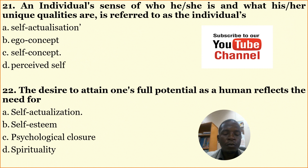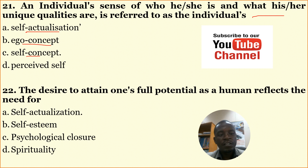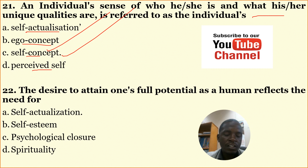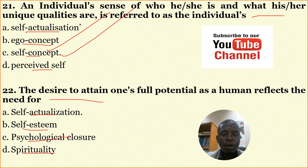Number twenty-one: An individual's sense of who he or she is and what his or her unique qualities are is referred to as — A: self-actualization, B: ego concept, C: self-concept, D: perceived self. The correct answer is self-concept. Number twenty-two: The desire to attain one's full potential as a human being reflects the need for — A: self-actualization, B: self-esteem, C: psychological closure, D: spirituality. The correct answer is A: self-actualization.